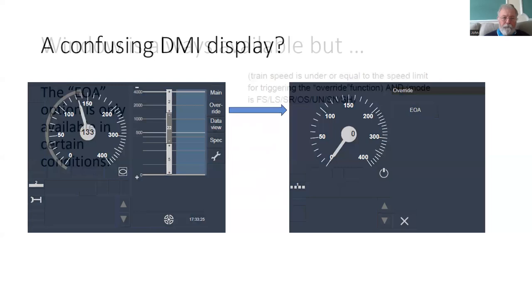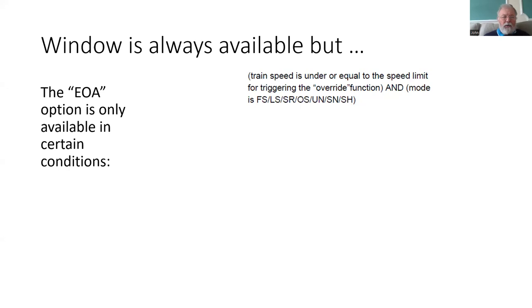Now the window for the override is always available, but the actual option of EOA is only available at certain times. Firstly, the train speed has to be under or equal to the speed limit set in the national value for the override function. That could be standstill — zero — or it could be a low speed.